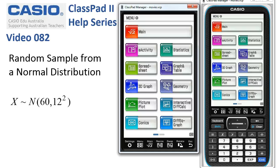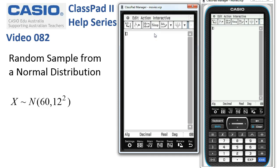Selecting a random sample from a normal distribution, this is best done in main, and a population has a mean of 60 and a standard deviation of 12.